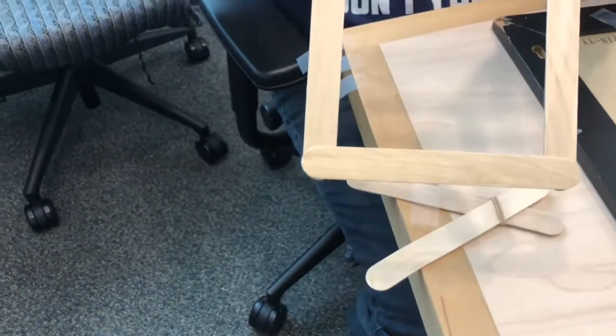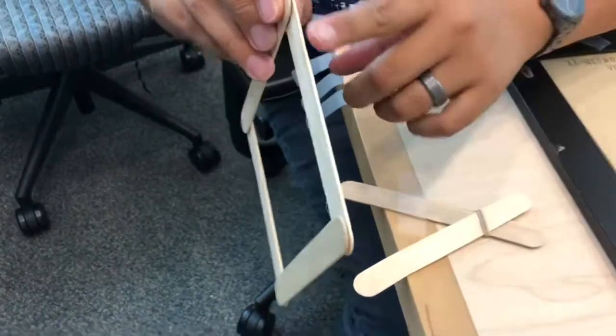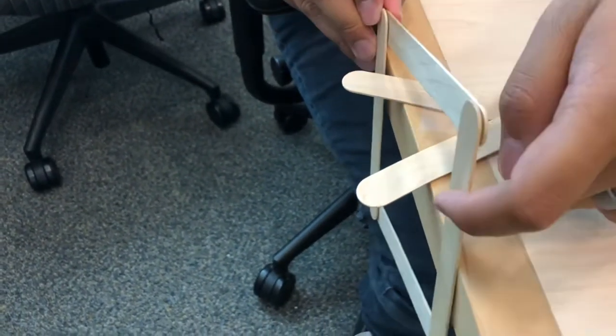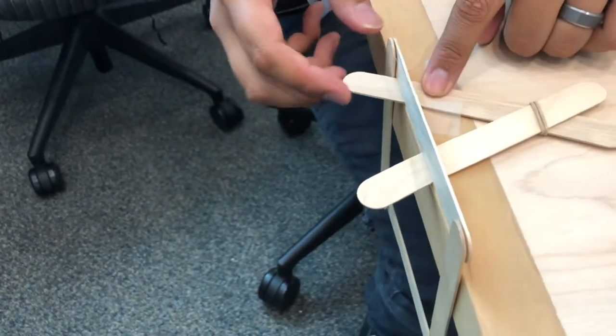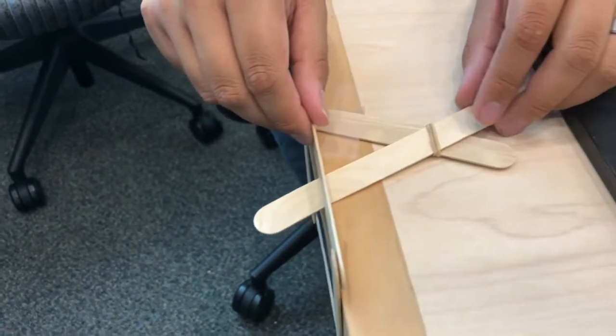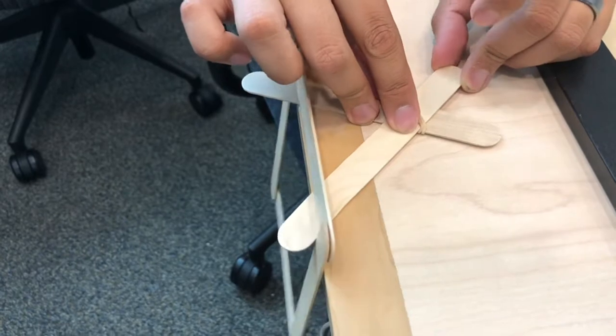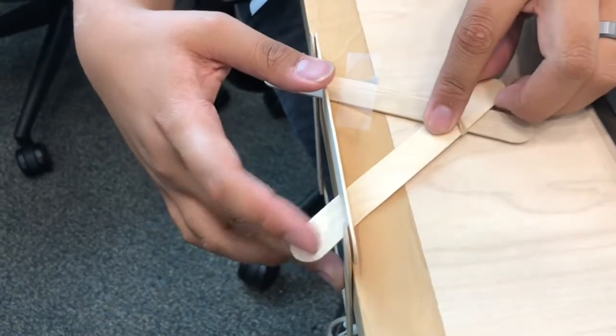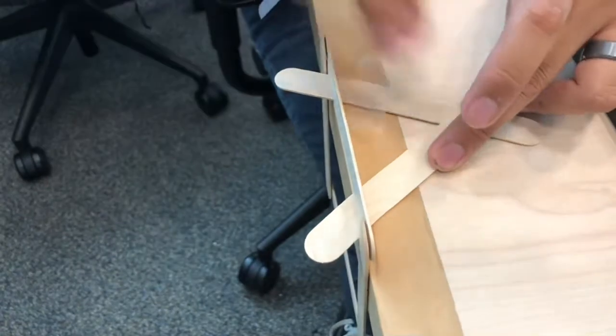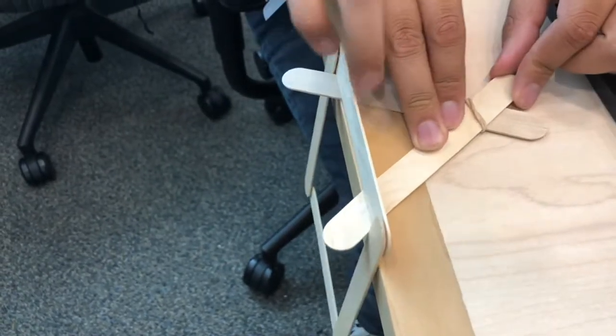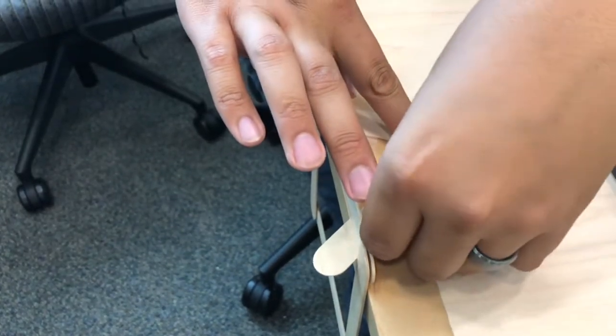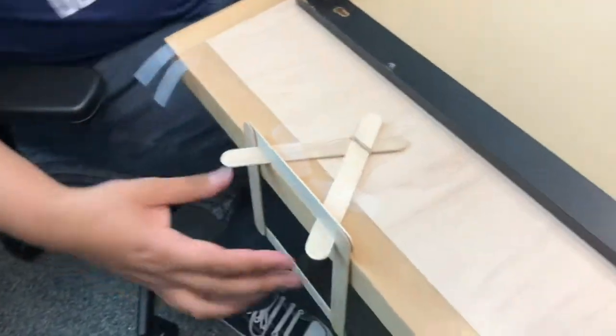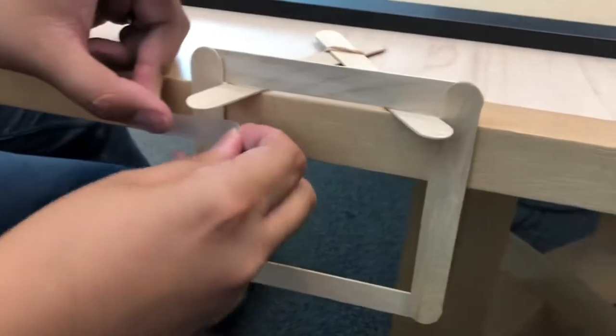We're going to tape down one side of our popsicle stick scissors. Then we're going to take the base that we made earlier, and we want the top layer of popsicle on the edge to go against the table. We don't want the bottom, we want the top. We want to put it right up against the side that we already taped. Now I'm holding this one in place. We're going to extend our scissors out as far as they'll go.